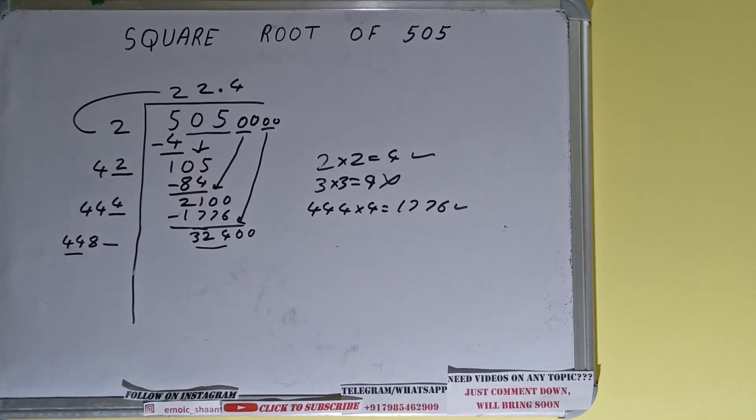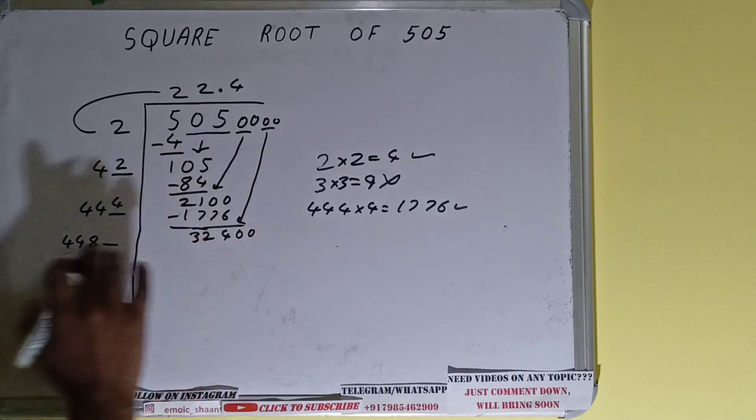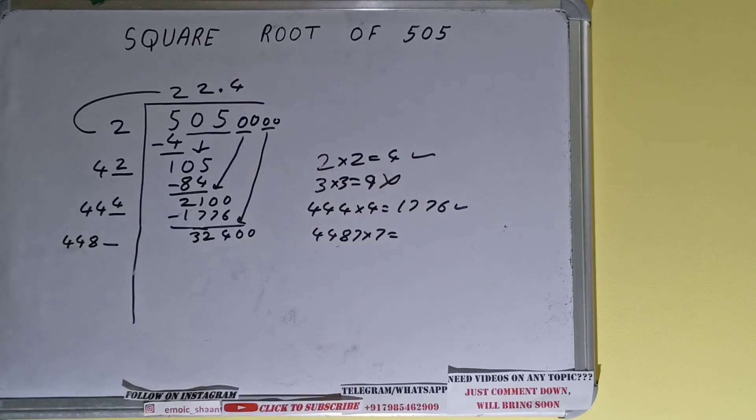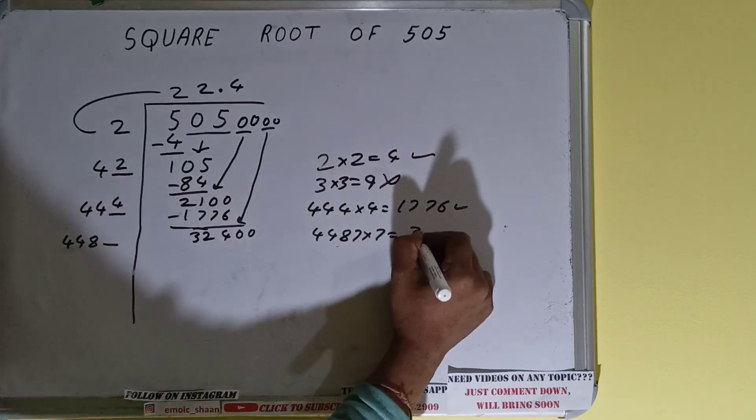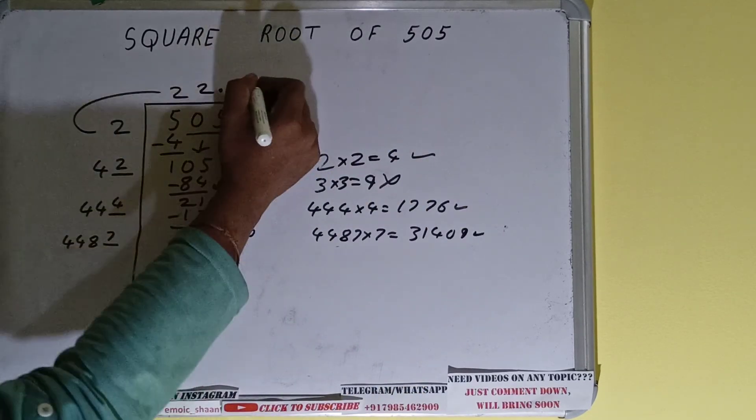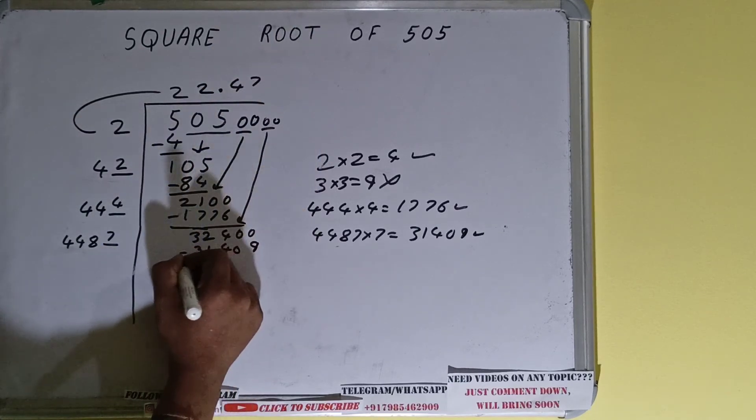So 4487 times is 3136. We can try seven times. Eight times will go beyond 324. So 4487 into 7 will be 31,409, which is good to take. So 7 here and 7 here, 31,409, subtract it.